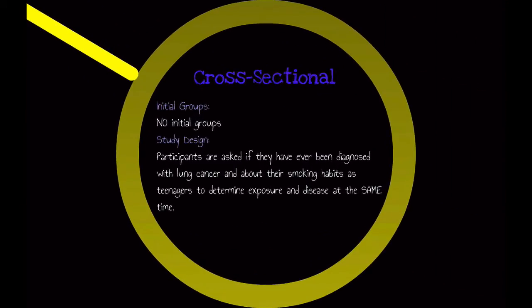Finally, we could do a cross-sectional study. Here, we do not have any initial groups. We take a group of participants and ask them if they had ever been diagnosed with lung cancer and about their smoking habits as teenagers. Here, we're trying to determine exposure and disease at the same time.